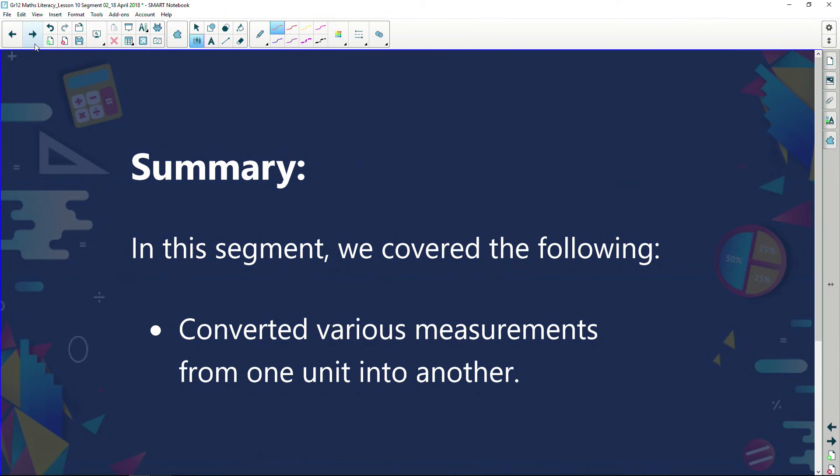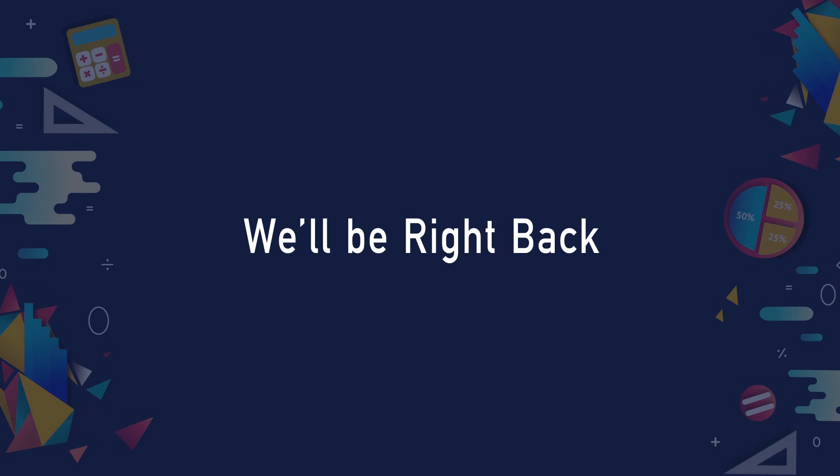In summary, in this segment we've covered the following: we've converted various measurements from one unit into another. When we get to the sections on perimeter, area, and volume, you're going to understand how important it is to be able to make conversions between different units. We'll chat again straight after this ad — cheers, thank you guys.